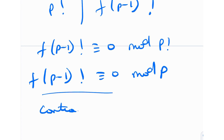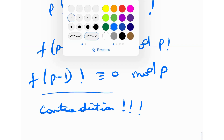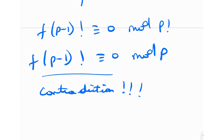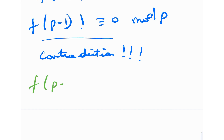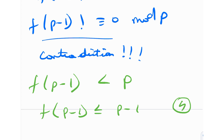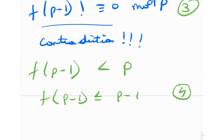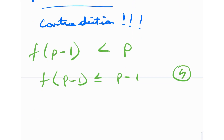Contradiction! From equation 2, f(p−1)! ≡ −1 mod p, but here we get 0 mod p. This contradiction means f(p−1) is not ≥ p, so f(p−1) < p, meaning f(p−1) ≤ p − 1. Let me call that equation number 4.